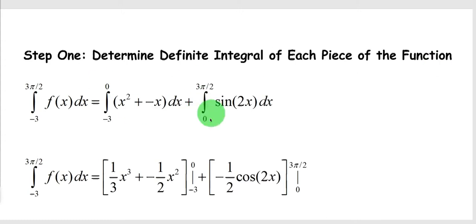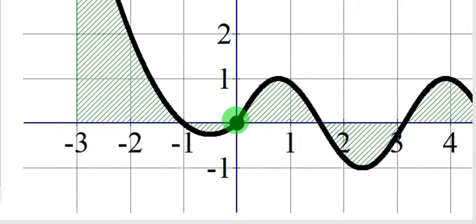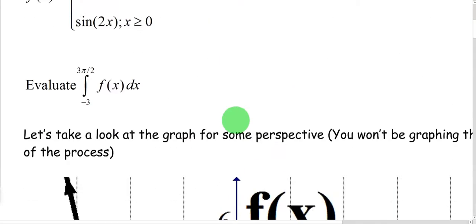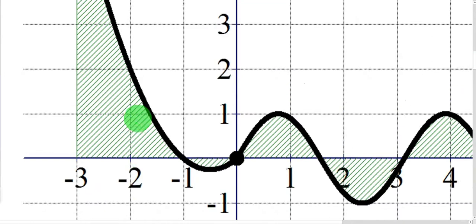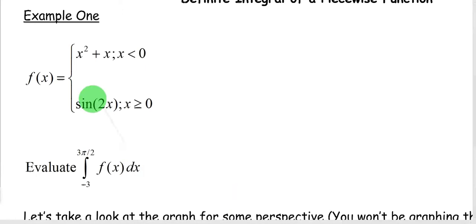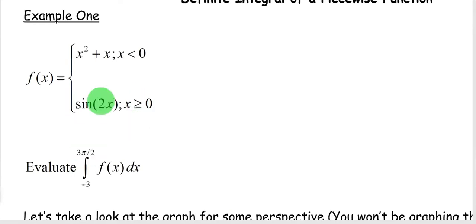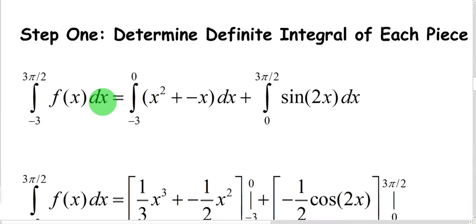We break up the integral at 0, where the pieces meet. The first piece is for x less than 0, the second for x greater than or equal to 0. So our first integral is from negative 3 to 0 of x squared plus x, and the next is from 0 to 3π/2 of sine of 2x.